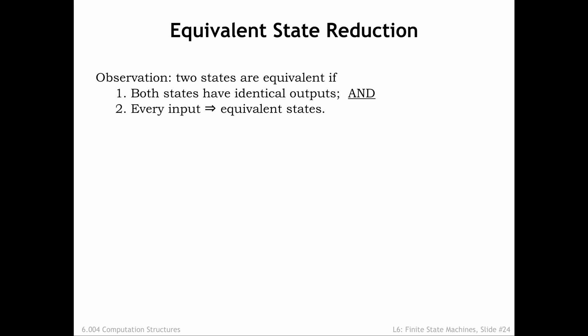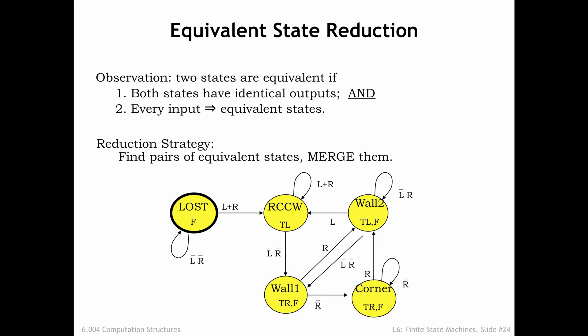Earlier we talked about finding equivalent FSMs with fewer states. Now we'll develop an approach for finding such FSMs by looking for two states that can be merged into a single state without changing the behavior of the FSM in any externally distinguishable manner. Two states are equivalent if they meet two criteria: the states must have identical outputs, and for each combination of input values, the two states transition to equivalent states. Our strategy will be to start with our original FSM, find pairs of equivalent states, merge those states, and keep repeating the process until we can't find any more equivalent states.